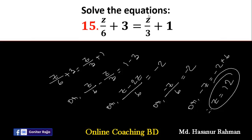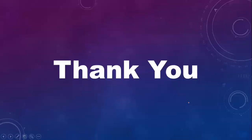You can check the answer: instead of z, if we put 12, then 12 divided by 6 is 2, and 2 plus 3 is 5 on the left-hand side. And 12 divided by 3 is 4, and 4 plus 1 is 5 on the right-hand side. Simple — very simple. So the answer is verified.